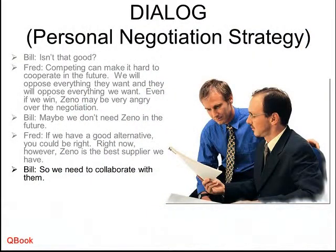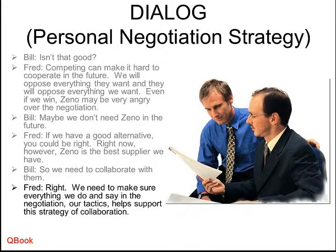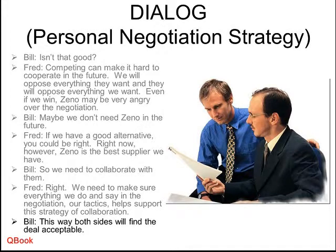Bill concludes they need to collaborate with Zeno. Fred agrees: everything they do and say in the negotiation — their tactics — must support the strategy of collaboration. Bill and Fred have chosen a very clear strategy: collaboration. Bill says this way both sides will find the deal acceptable.